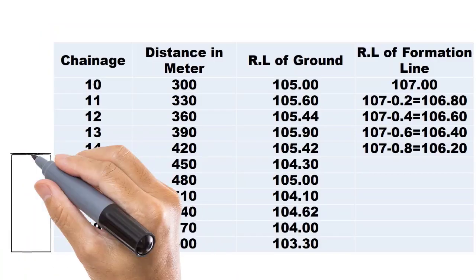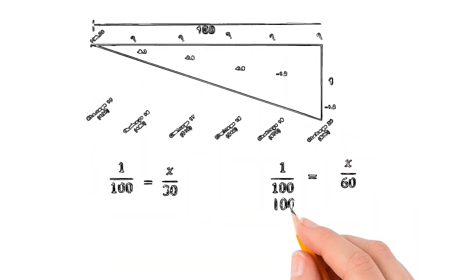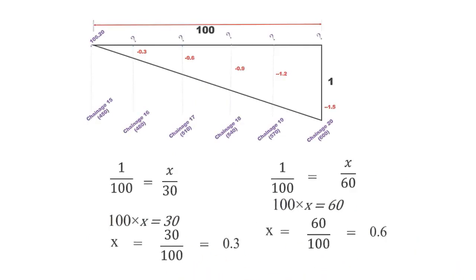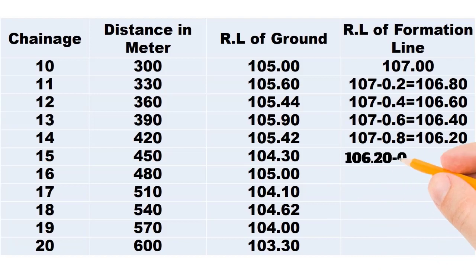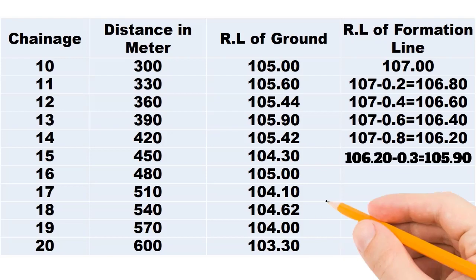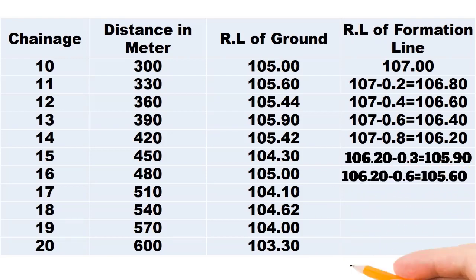There is a change in gradient from chainage 14 to 20 — that is 1 in 100 downgrade. Follow the same procedure. In this case, each preceding point will decrease 0.3 units from the previous. Deduct 0.3 from the reduced level of chainage 14 to get the reduced level of chainage 15, 0.6 from chainage 15 to get chainage 16, and so on.